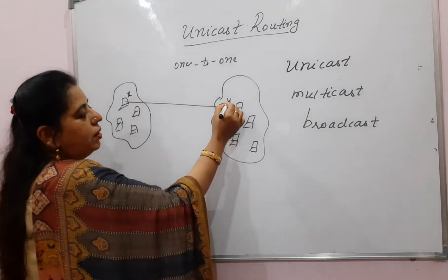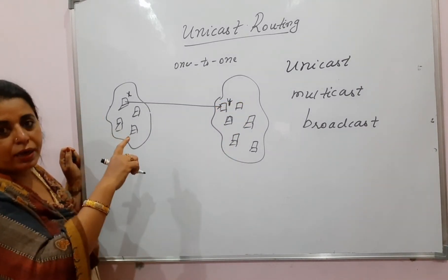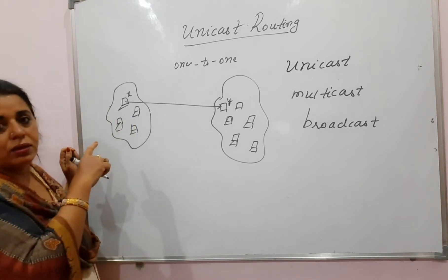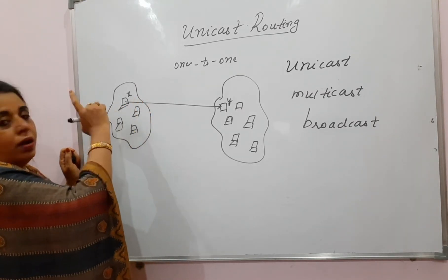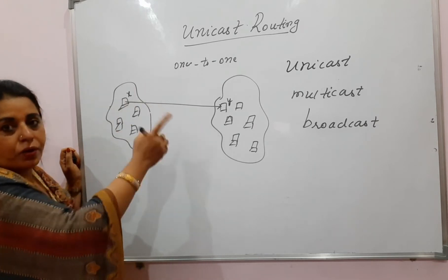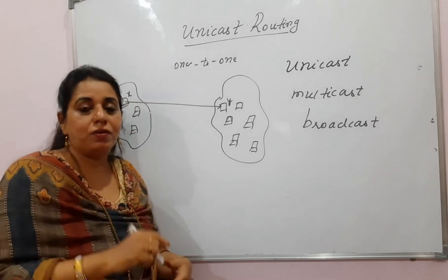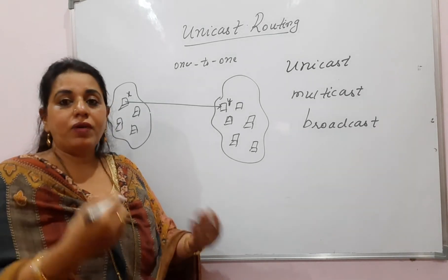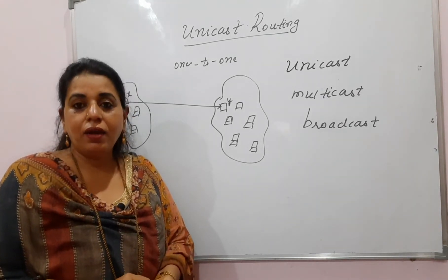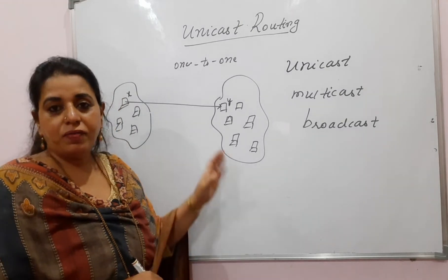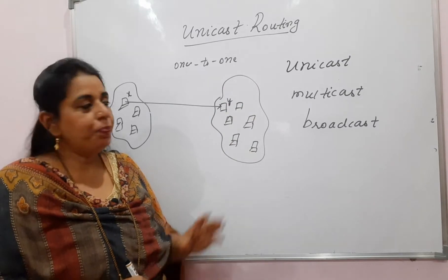The routing protocols that help in implementing unicast routing — making possible the transmission from source to destination in one-to-one communication — are called unicast protocols. I'll also explain how many categories they can be divided into, but first let us see the differences between these three terms.